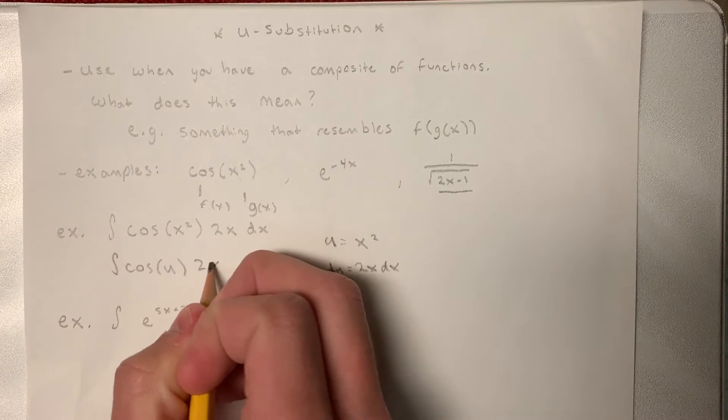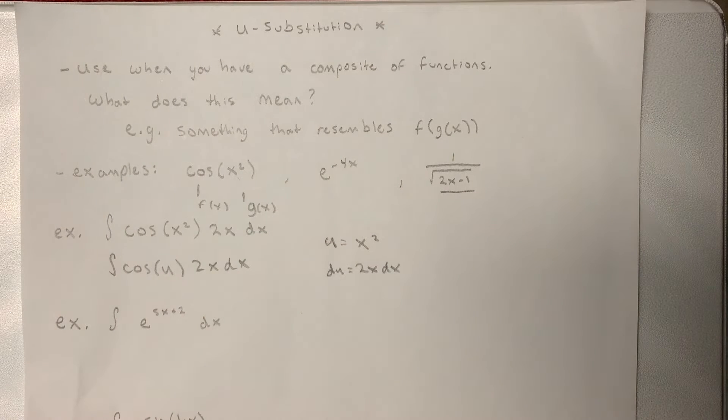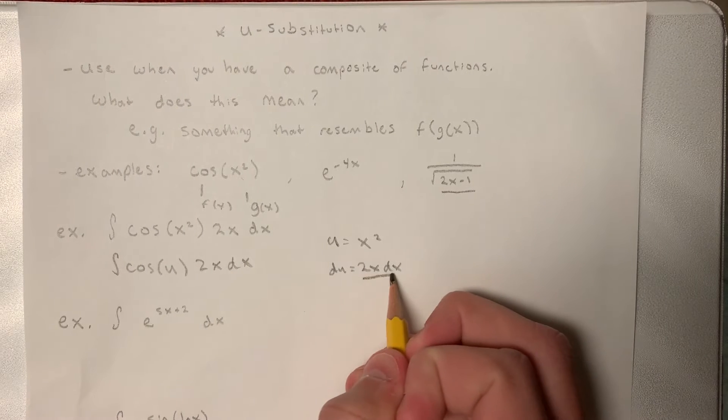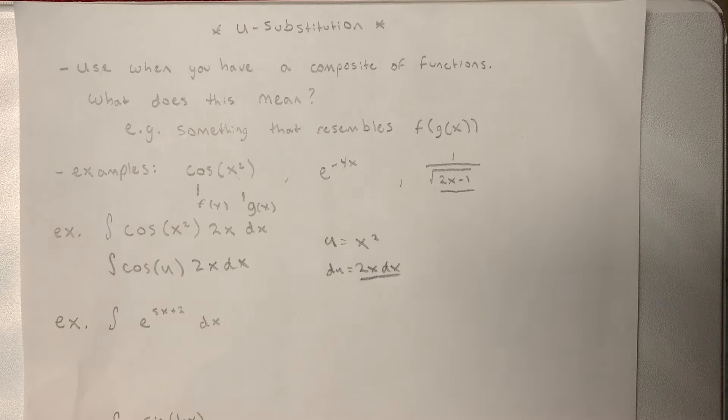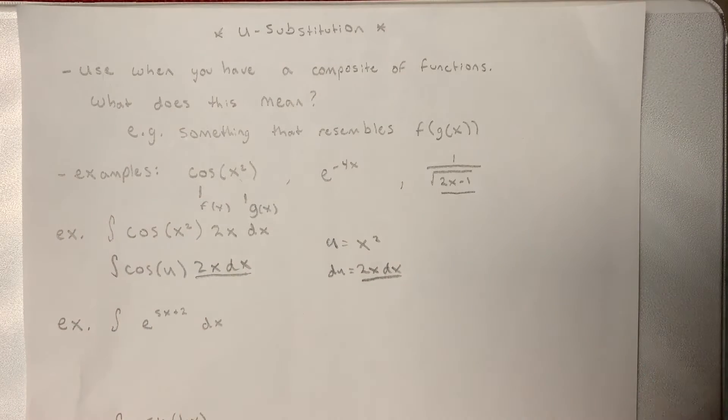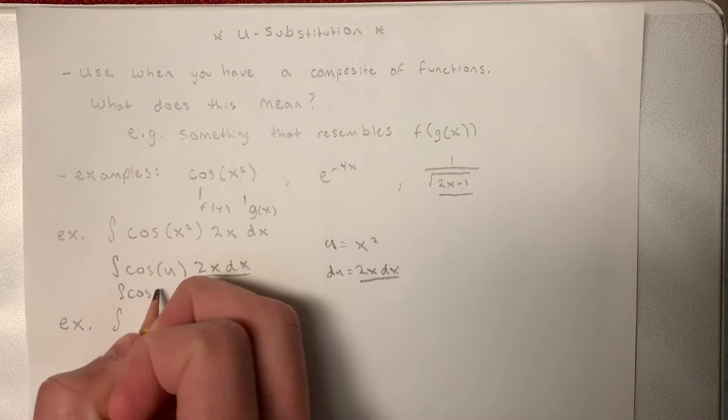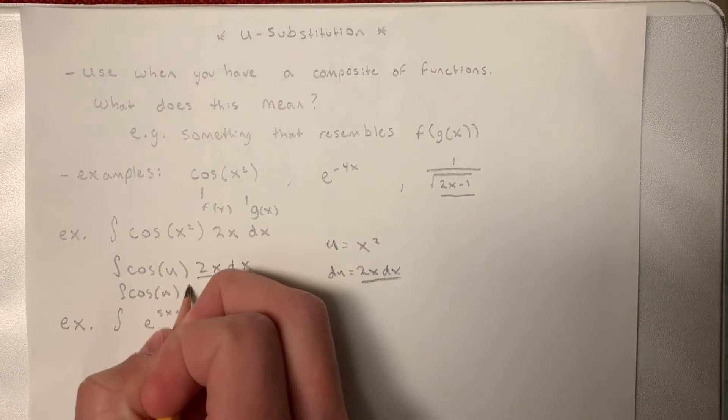So let's bring this down. We have cosine u 2x dx. So how does that simplify anything? Basically it just looks like I've introduced another variable. Well, if you see our du here equals 2x dx, which is what's left over in our integrand. So we can just take that away and call this cosine of u du.